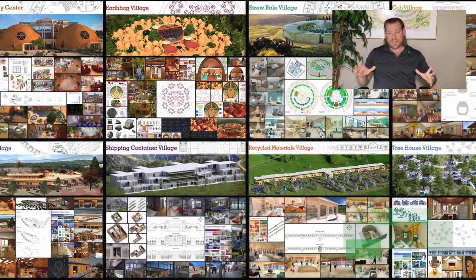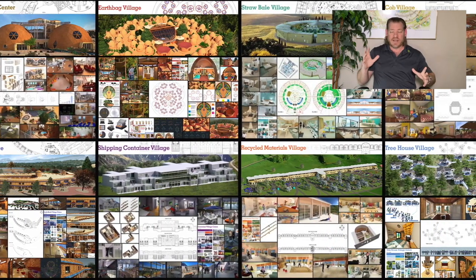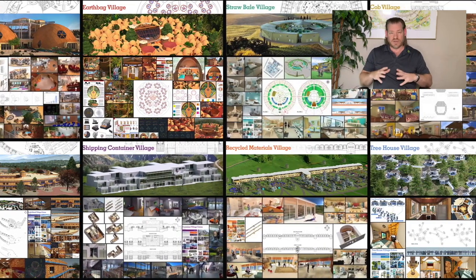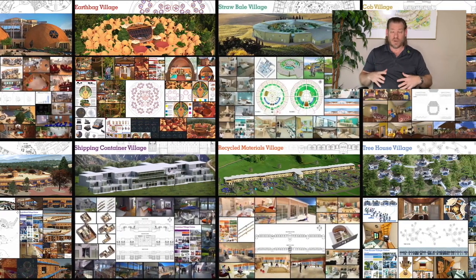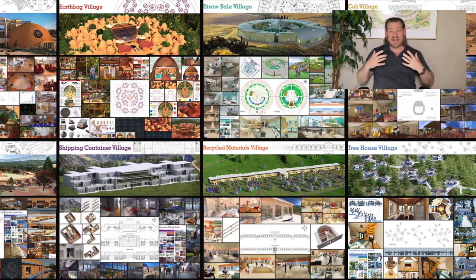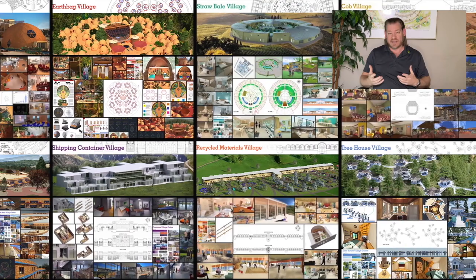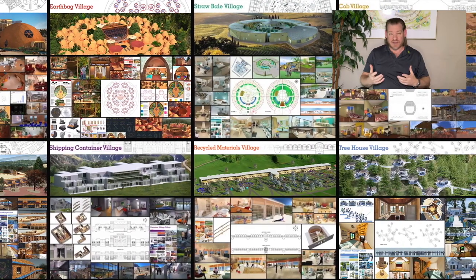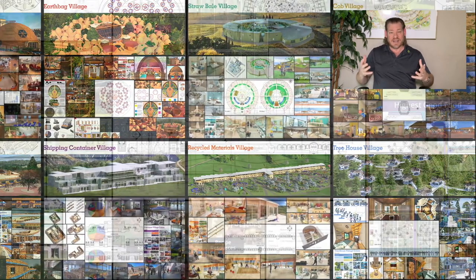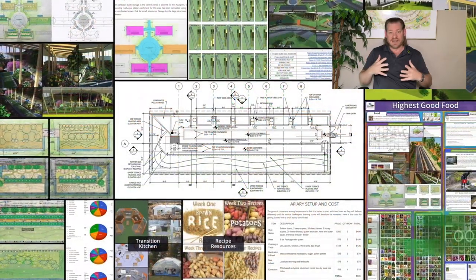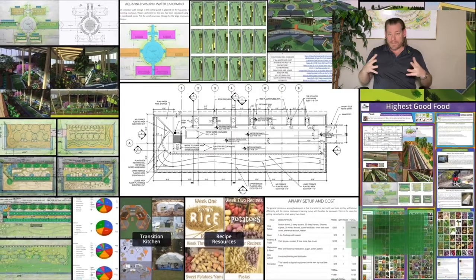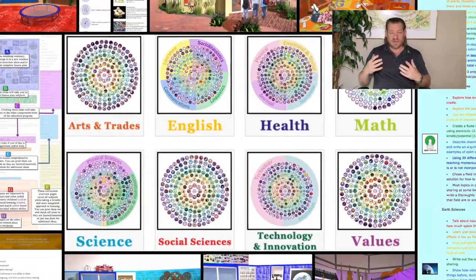Everything you see happening in the background of this video is what we are open-sourcing and free-sharing: tools, tutorials, resources, and do-it-yourself instructions for plans for replication as an example of what is possible by creating a sustainability matrix. A sustainability matrix is a matrix — an interconnected group of parts and components — designed to work better together than they work individually.